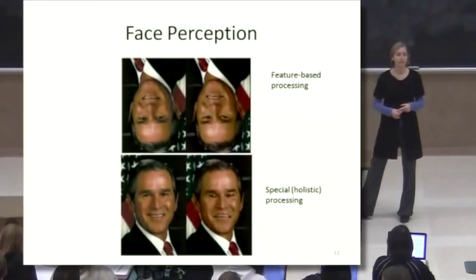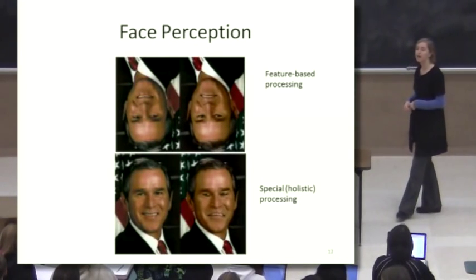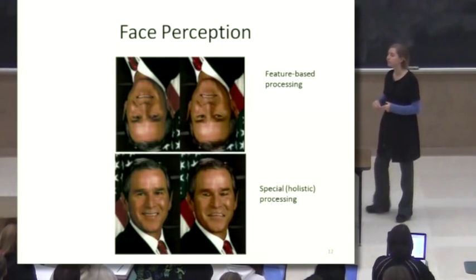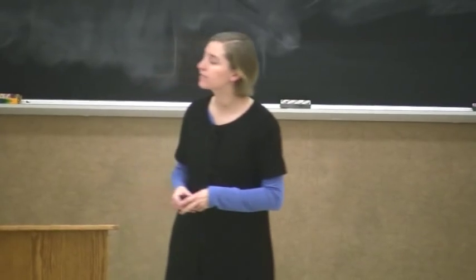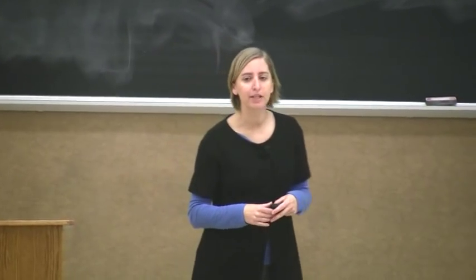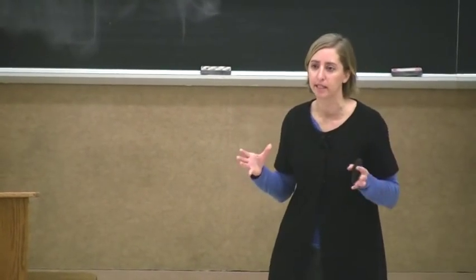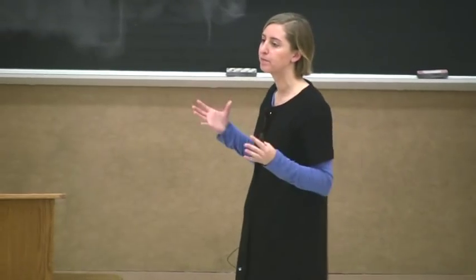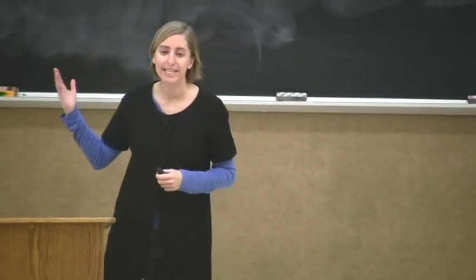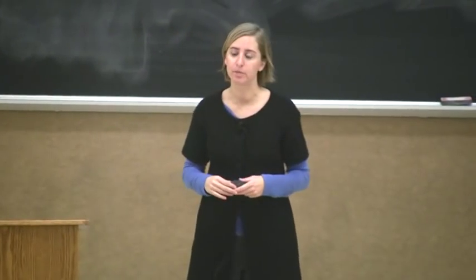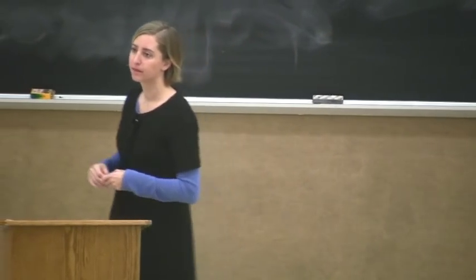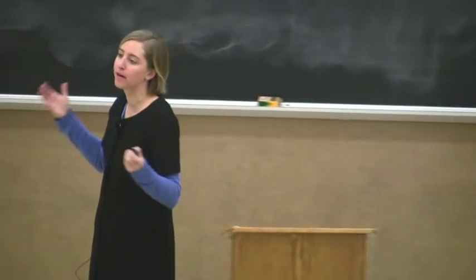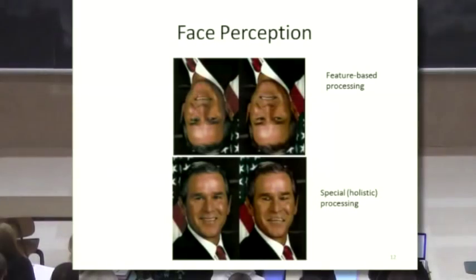We talked about the specialized processing for faces. Using fMRI, we know that there are dedicated brain areas for seeing faces. And when you look at a face, you process it in a special way. In this case, you process it holistically, which means you see how the different parts relate to each other, which is why it's really easy to see the differences between the two pictures when the face is right side up. When the face is upside down, for whatever reason, you don't process it as a face. You process it for the individual features like you would any other object, and then the differences are not as clear. This is known as the Margaret Thatcher illusion.